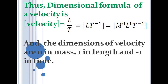The dimensional formula for velocity is M⁰ L¹ T⁻¹, enclosed within square brackets. The dimensions involved are: power of mass = 0, power of length = 1, and power of time = −1. So the dimension of velocity is 0 in mass, 1 in length, and −1 in time.